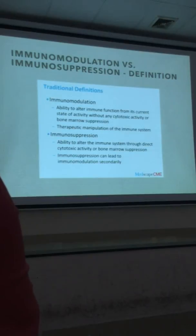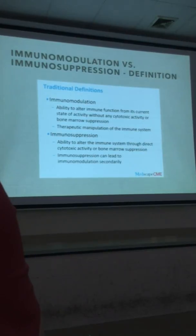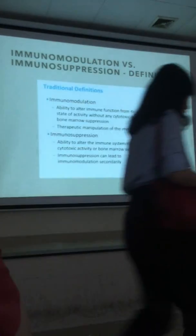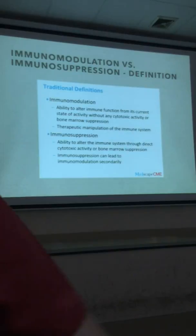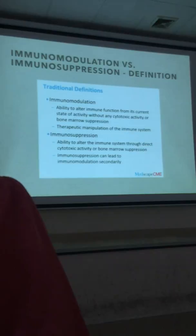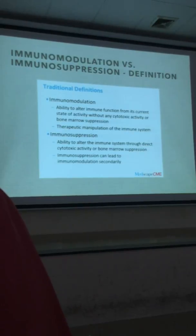The definition of immunomodulation versus immunosuppression is the ability to alter immune function from its current state of activity without cytotoxic activity or bone marrow suppression. Immunosuppression involves the ability to alter immune function through direct cytotoxic activity or bone marrow suppression, and immunosuppression leads to immunomodulation as a secondary effect.